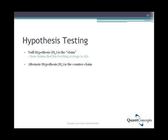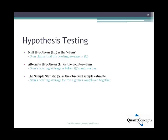The alternate hypothesis, usually denoted by H1, is the counterclaim — that is, what must be true if the null hypothesis is false. In our example, the alternate hypothesis is that Sam's long-term bowling average is below 150, and he is a liar and a dodgy friend. The sample statistic, usually denoted by X, is the observed sample estimate we use to determine whether the null hypothesis is false. In this case, the sample statistic is Sam's average score for the three games you played with him.